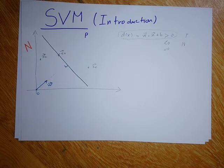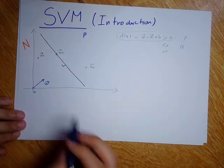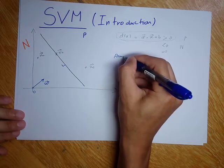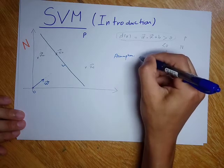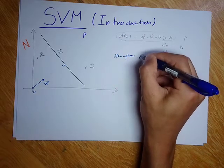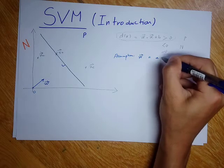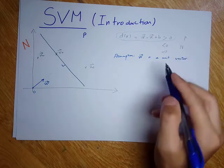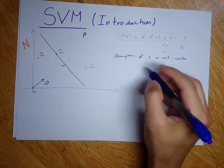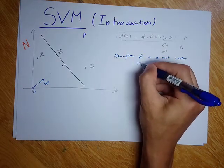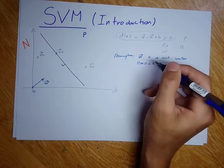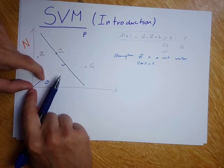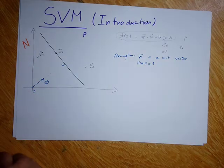Now I want to start with an assumption. I will assume that W is a unit vector. If you don't remember what a unit vector is, it just means that the magnitude of W is equal to 1. If I measure the magnitude of this vector, I would get a value of 1.